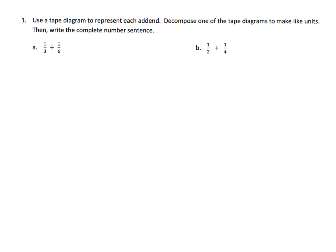Here we're going to begin finding our common denominator — or as they say, like units. To make like units, that's lingo for common denominator. And we're going to be using tape diagrams to do that. We're going to start with one-third plus one-sixth, and we're going to draw two tape diagrams: one for one-third and one for one-sixth. We need to make these tape diagrams identical.